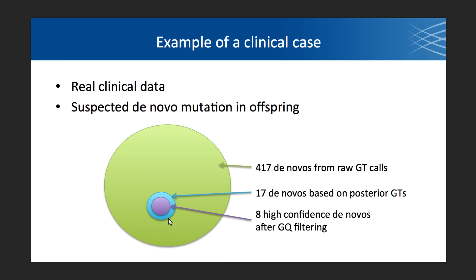In an actual clinical case from the Broad, raw genotype calls after variant filtration yielded 417 de novos — the ballpark is about 30 per genome, so that's much higher than expected. After applying population priors and family information from the pedigree, that came down to just 17. After applying the high-confidence GQ filter, only eight calls remained. For a clinical geneticist, eight calls are a lot easier to review than 417, and this is before doing any functional annotation.